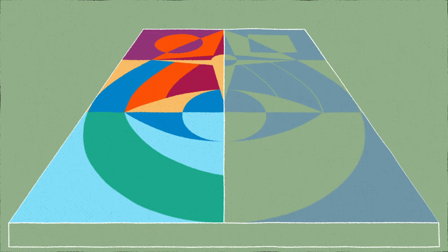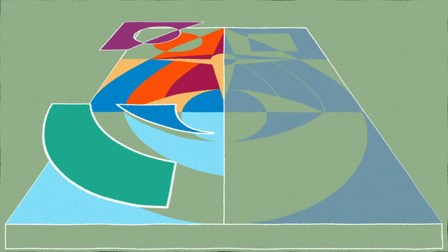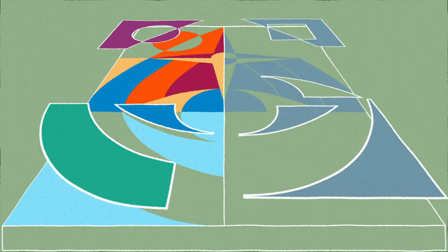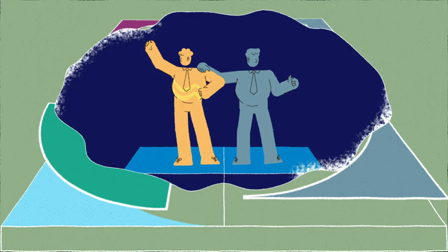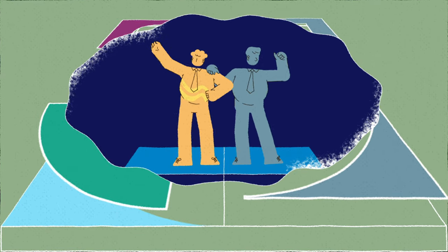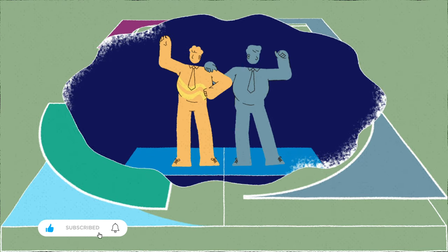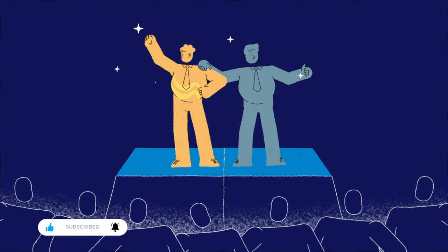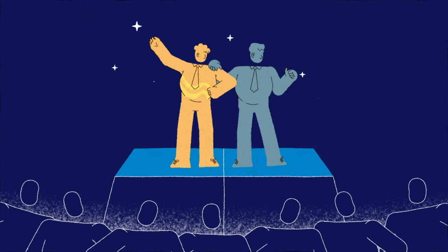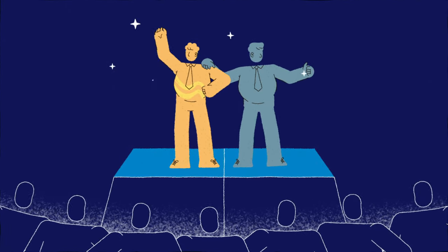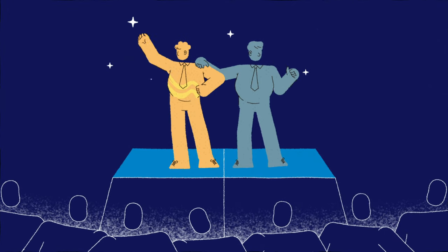One brushstroke represents the multipliers and the other stroke embodies the diminishers. In their book Multipliers, Greg McEwan and Liz Wiseman offer us profound insights into these two leadership archetypes. They invite us to explore the transformational power of multipliers and the detrimental impact of diminishers on the teams they lead.